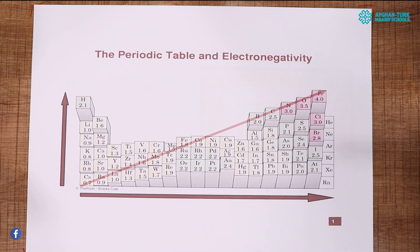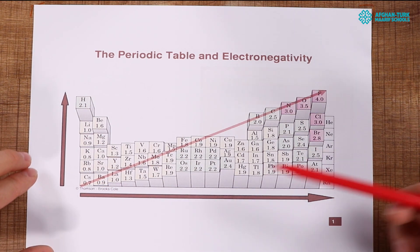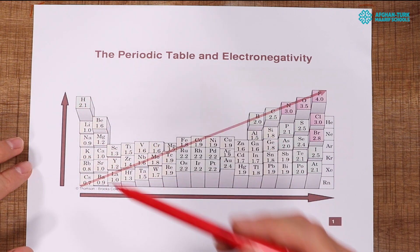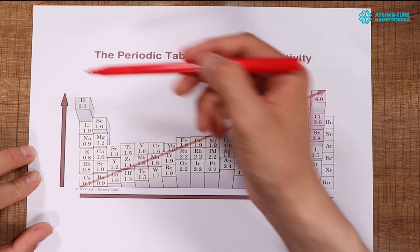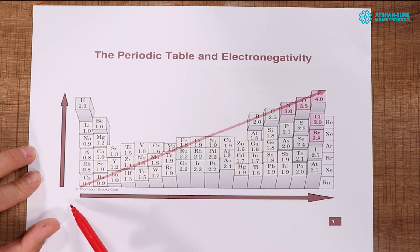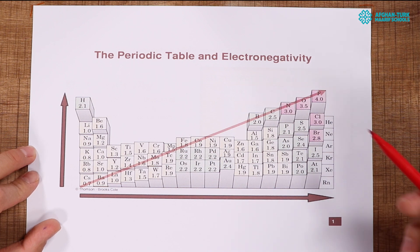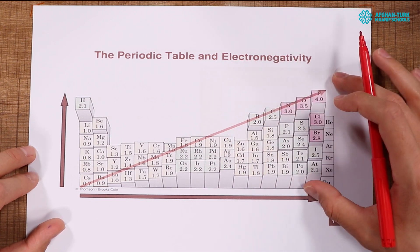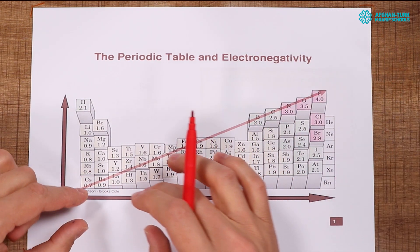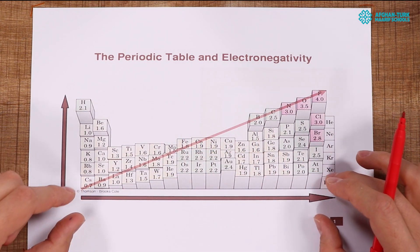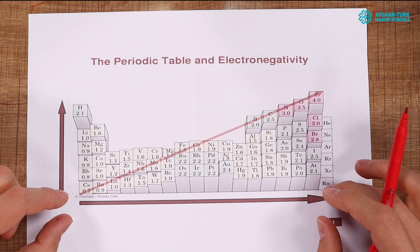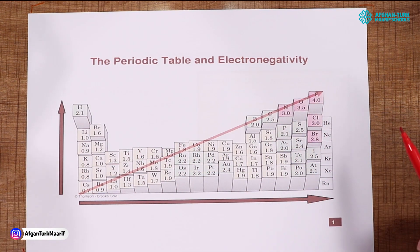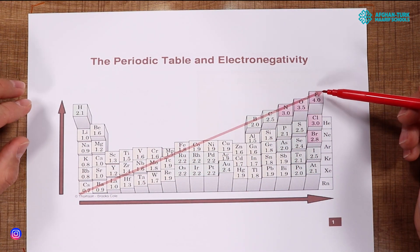This is a periodic table. The arrow shows upwards, meaning if we go higher the electronegativity increases, or if we go from left to right the electronegativity also increases. In this table, not all periods are present — periods one through six are shown, but the seventh period is not present here.